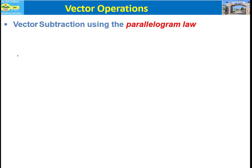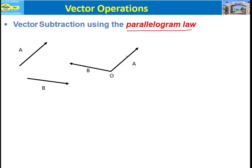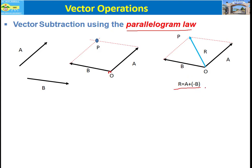Now let's look at vector subtraction. Using the parallelogram law, subtraction is a special case of vector addition. If we have vector A and vector B in arbitrary directions and want to subtract vector B from vector A, we add negative vector B to vector A. Connect negative vector B and vector A tail to tail at point O, draw parallel lines to both, and the resultant is the distance from O to P. Mathematically, R equals A plus negative B.